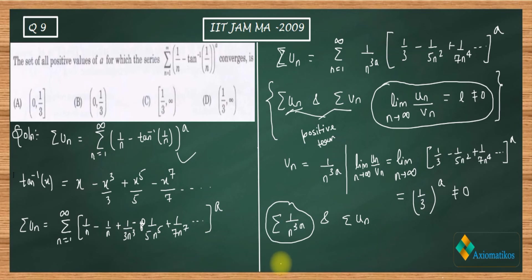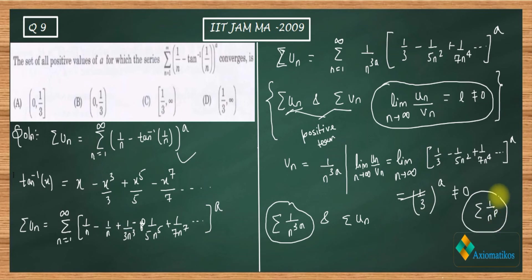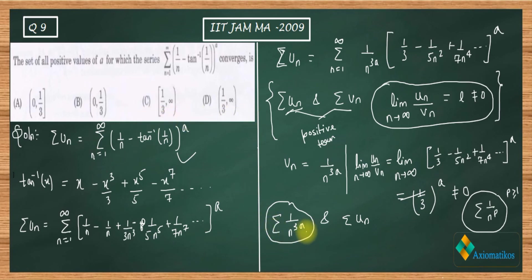Now I apply the p-series test. The series summation 1/n^p converges if and only if p is greater than 1, and diverges if p is less than or equal to 1. Since our comparison series is summation 1/n^(3a), this is a p-series with p = 3a.